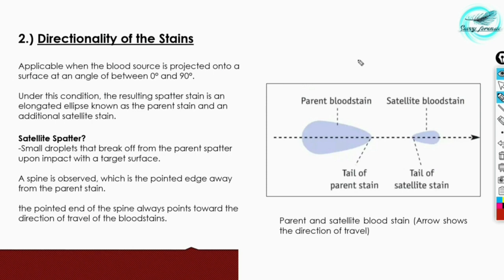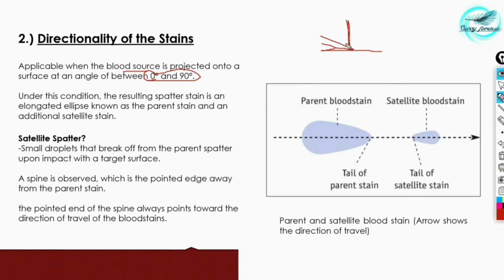The second topic in analyzing blood stains is finding the directionality — how crime scene experts find the direction from which stains arrived. This is applicable when a blood source is projected onto a surface at an angle between 0 and 90 degrees. Under this condition, the resulting spatter is an elongated ellipse known as the parent stain.